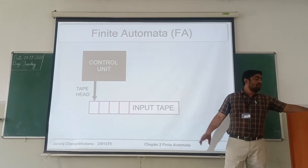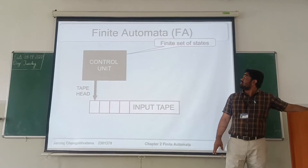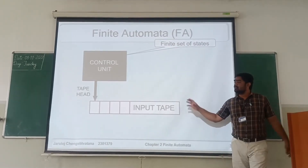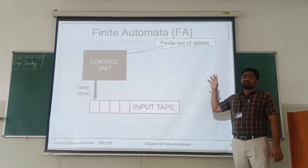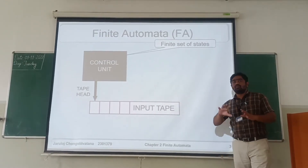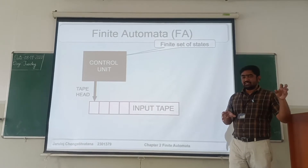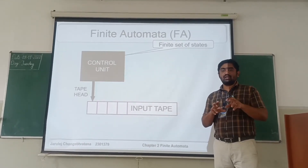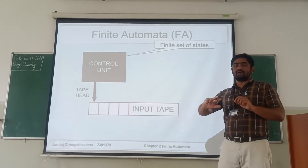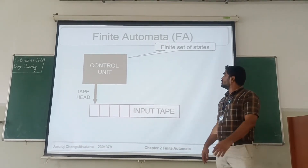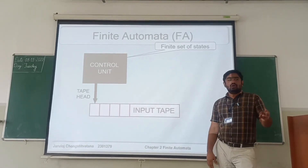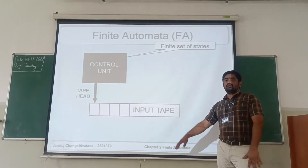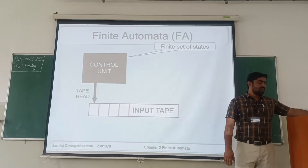Inside the control unit, there will be a finite set of states. The finite control rules — the finite set of states — are there while you are working with the automata. These states will accept some inputs for some data and will make a decision whether that input needs to be accepted or rejected.